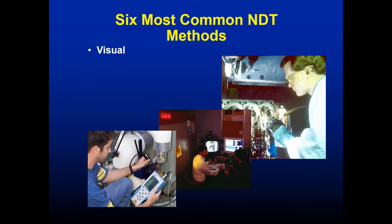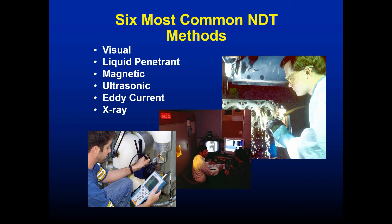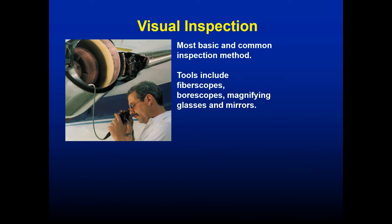The six most common NDT methods — also the six methods the Ocean Corporation trains — form the foundation of almost all other methods. First is visual inspection. It is the most basic and is performed alongside any other type of NDT inspection. It boils down to physically looking at the piece or material for visual defects, whether with the naked eye or with tools.